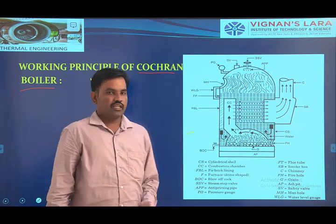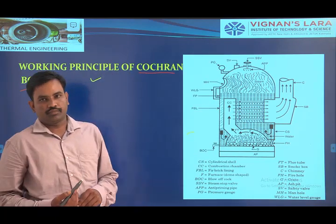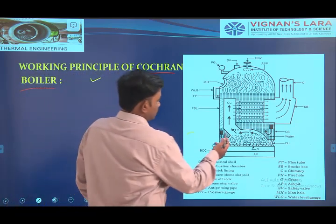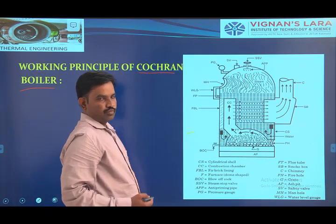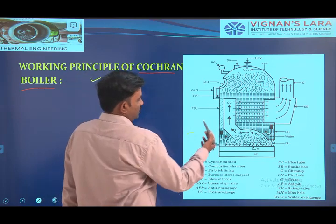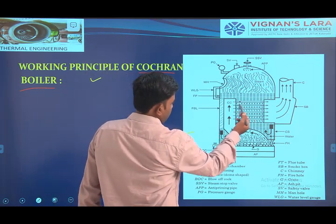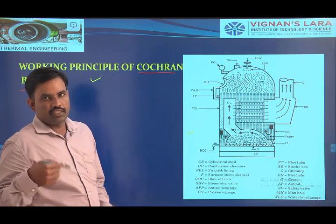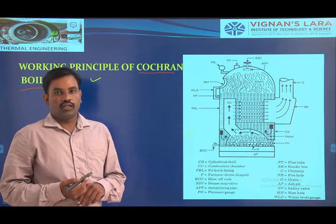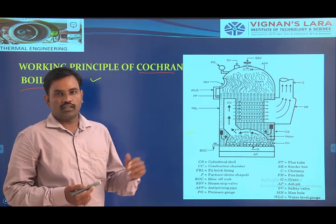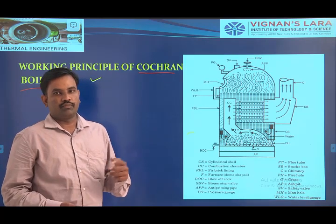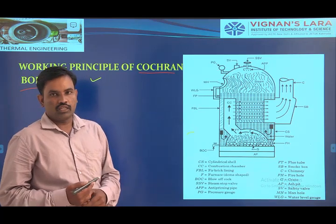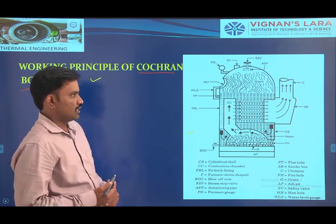So this type of boiler is a fire tube boiler. Inside the furnace, we are generating the combustion products, and those combustion products we are introducing into the inside of the tubes of the boiler. The tubes are submerged in the water. That water is heated and converted into steam. That generated steam we are collecting through the steam space.